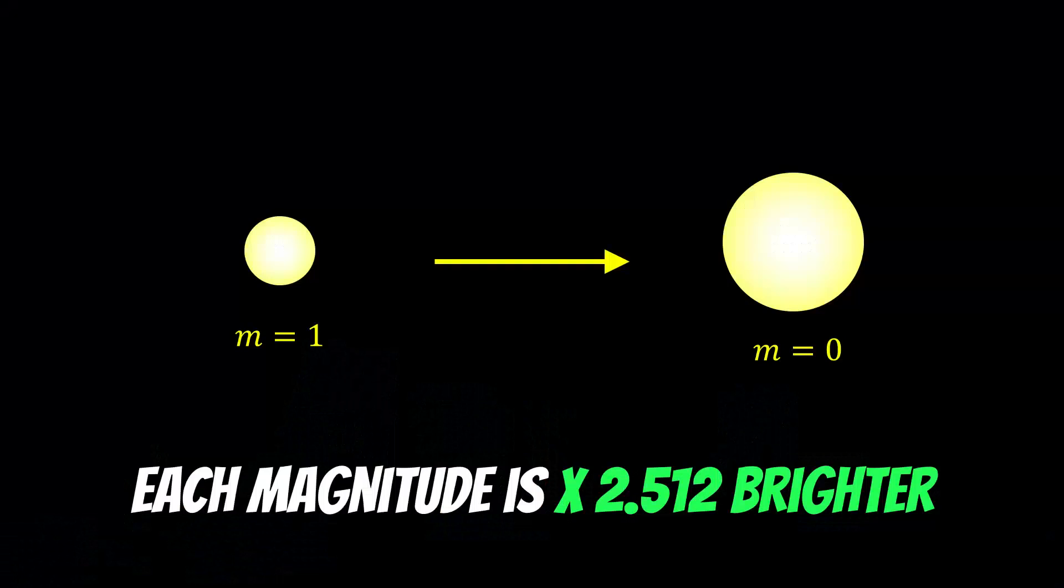Now for each magnitude difference, it's about two and a half times brighter. So if we had a magnitude zero star, apparent magnitude zero, and an apparent magnitude one, then the zero magnitude star is going to be about two and a half times brighter. And it works backwards. If you had a minus magnitude star, then it would be brighter than the one and the zero.